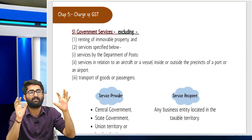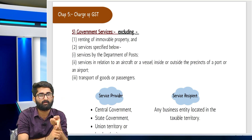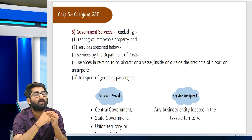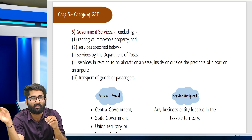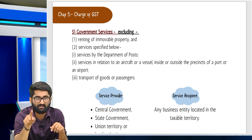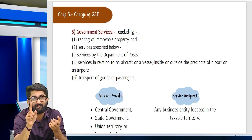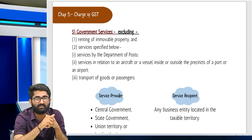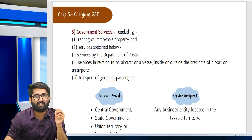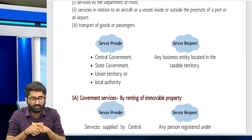Government services: any services given by the government to a business entity — that is RCM, except: renting of immovable property, services by the Department of Post, services in relation to aircraft or vessel inside or outside ports or airports, transport of goods or passengers, and railways (added by amendment). These exceptions are excluded from RCM. Services provided by central government, state government, union territory or local authority to any business entity in the taxable territory — small business entity (turnover ≤ 10/20/40 lakhs) is exempt; above threshold limit it is taxable.